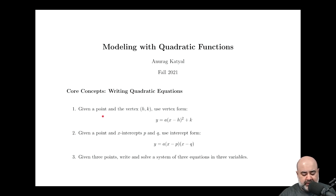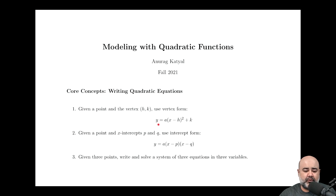First, we could be given a point and the vertex of the parabola. In that scenario, we would want to use the vertex form. The vertex form of a parabola is y equals a times the quantity x minus h squared plus k, where h comma k form the coordinates of the vertex.